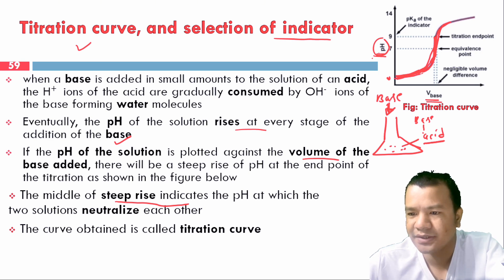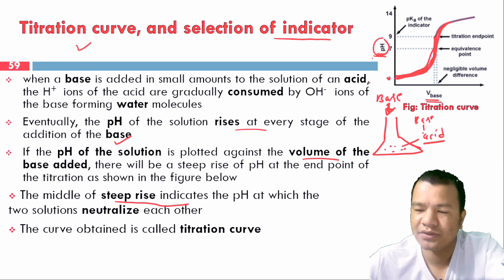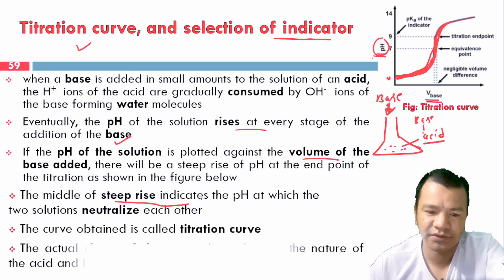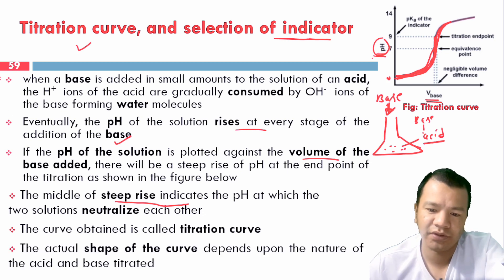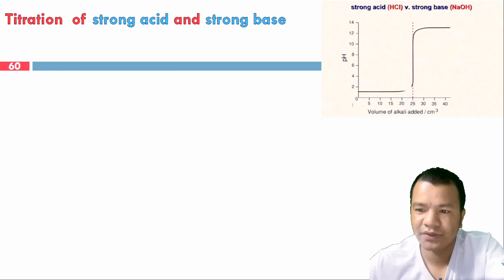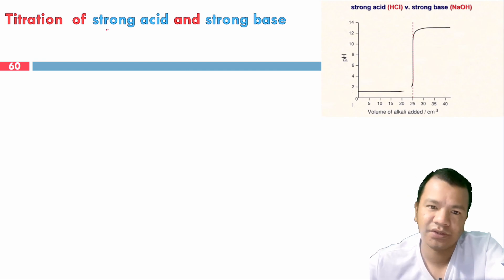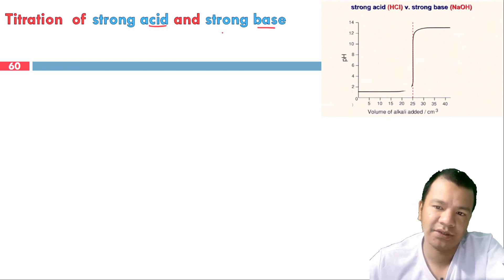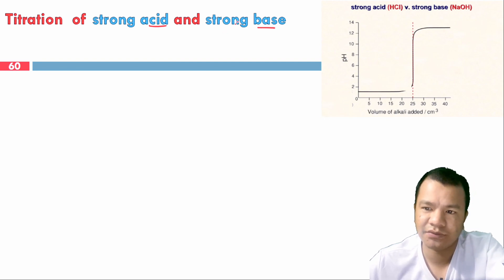This curve applies to strong acid or weak acid titrations. There are different conditions — the acid can be strong or weak. The shape of the titration curve depends on the type of acid used.